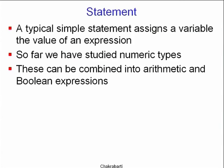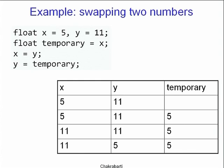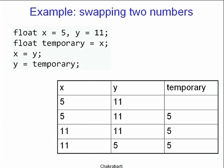These numeric types and character types can be combined into various arithmetic and Boolean expressions — we have seen that already. For example, to swap two numbers you declare a temporary, assign it to one of them, and then do the switch.